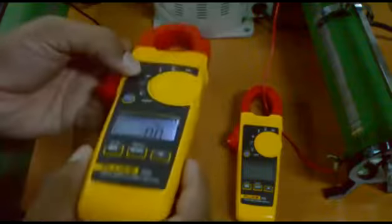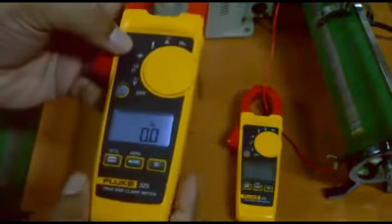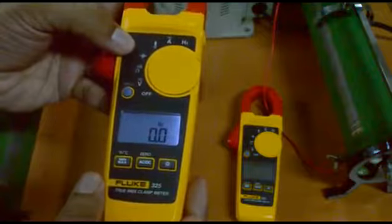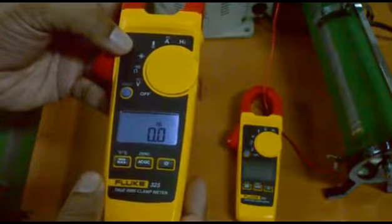The meter has buttons for turning on backlight, choosing between AC and DC measurement, and changing the unit of temperature measurement between degrees Centigrade and Fahrenheit.